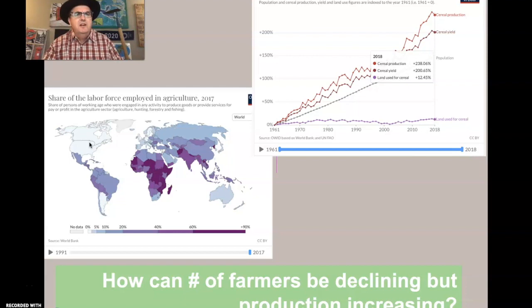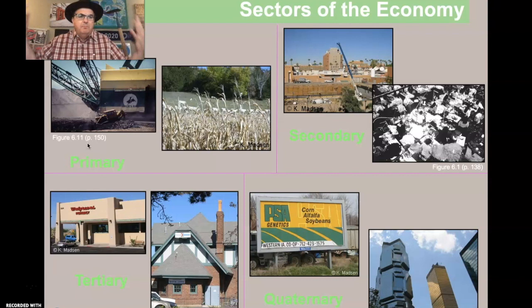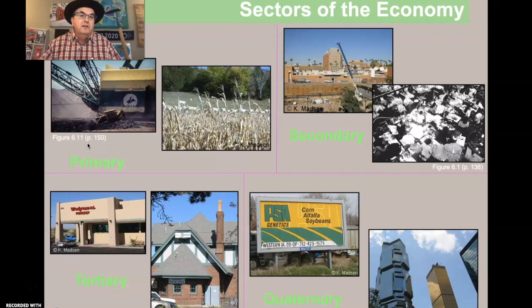Sectors of the economy — you need to know these. Agriculture and mining is in the primary sector. Secondary is manufacturing. You've got to know that that means manufacturing, because all four of these sectors work together in agriculture today; we can't separate them out so much anymore. Tertiary is the service sector — these are the truck drivers driving products across our country and getting goods to markets, and the grocery salespeople selling those goods in stores. That's the tertiary, the service sector.